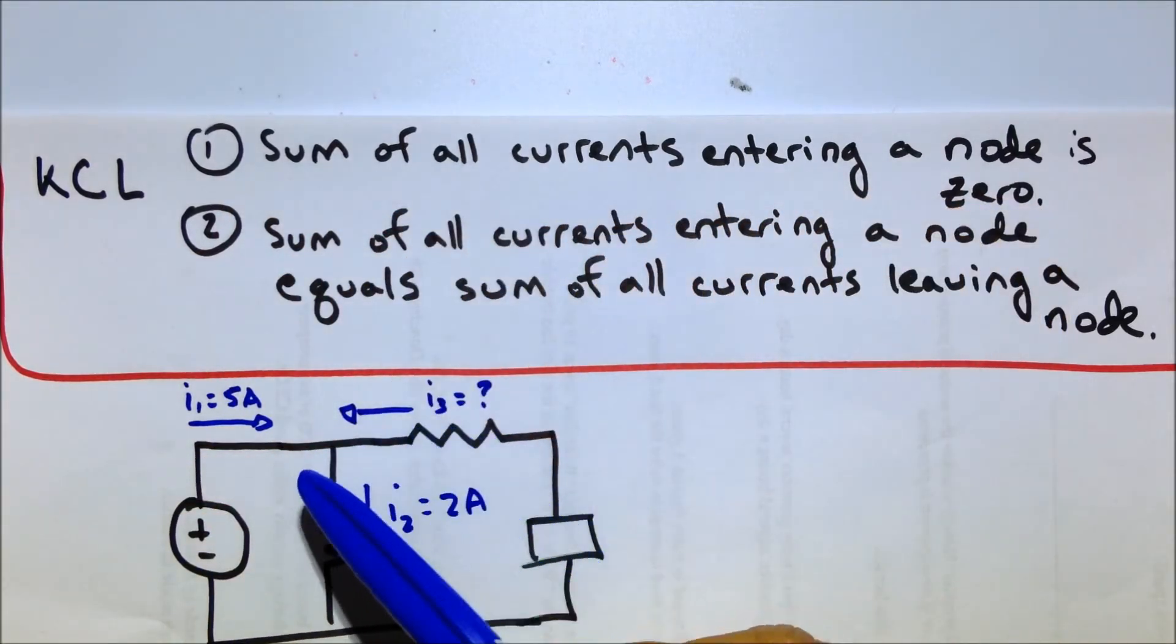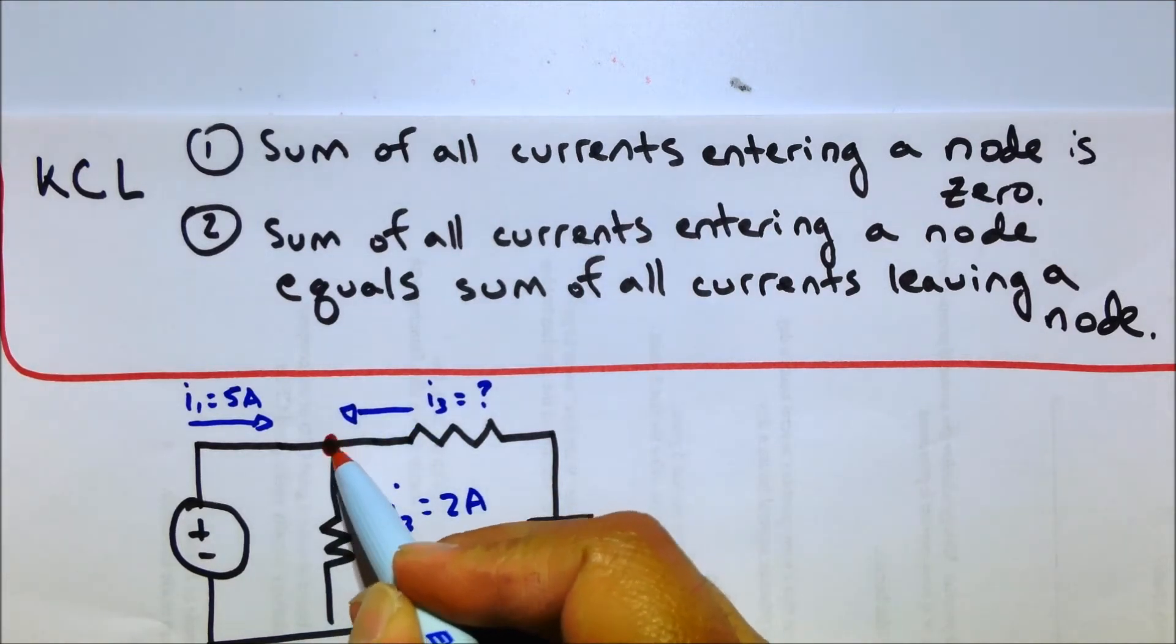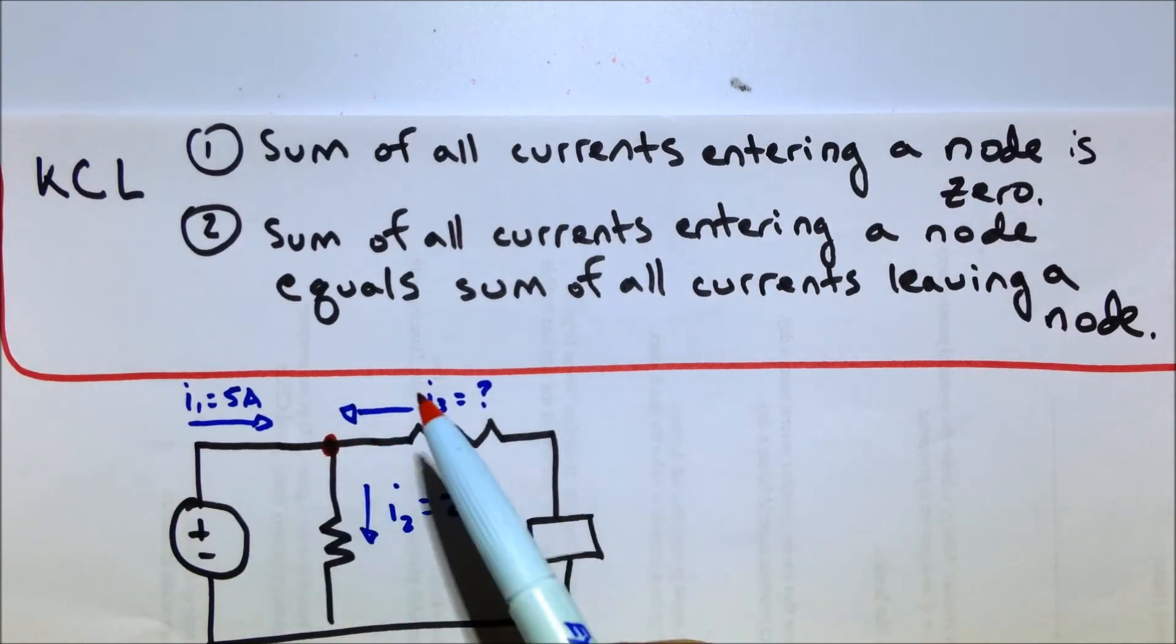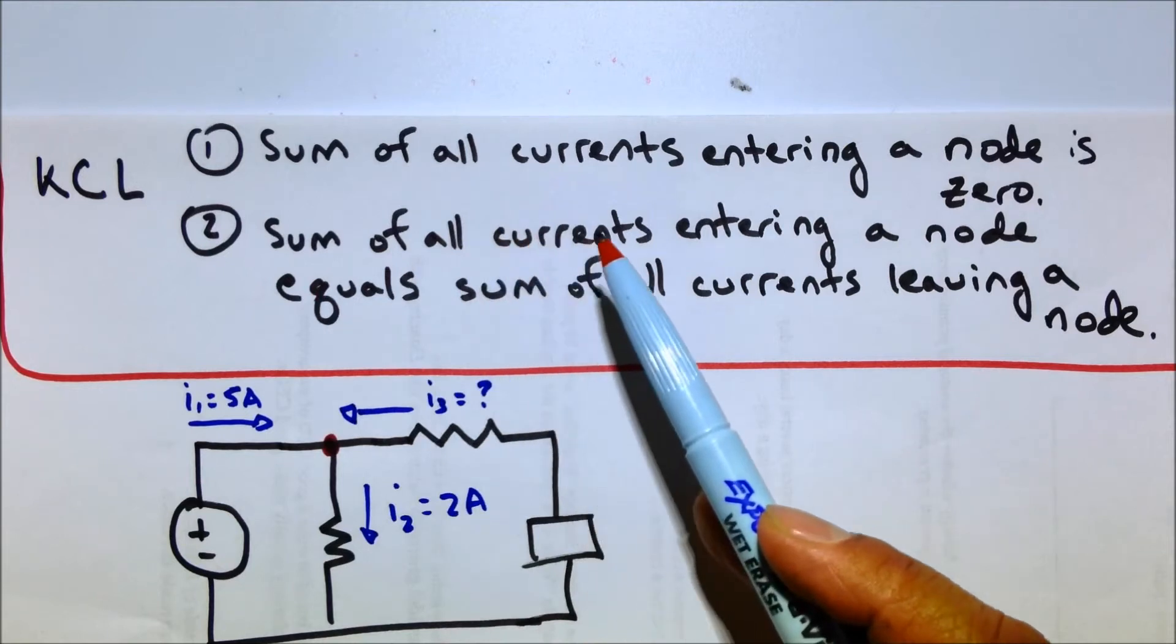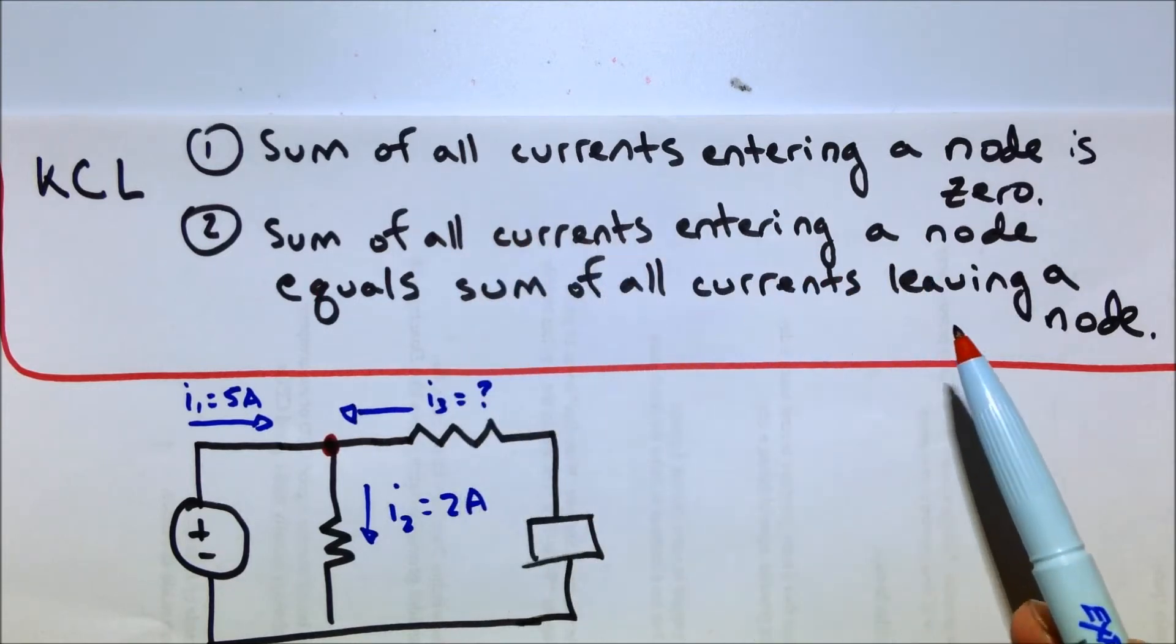So if you add up all the currents going into, here's our practice circuit, into that node, if you add up all the currents going into it, it'll equal zero. But then you'll also hear the sum of all currents entering a node equals sum of all currents leaving a node.